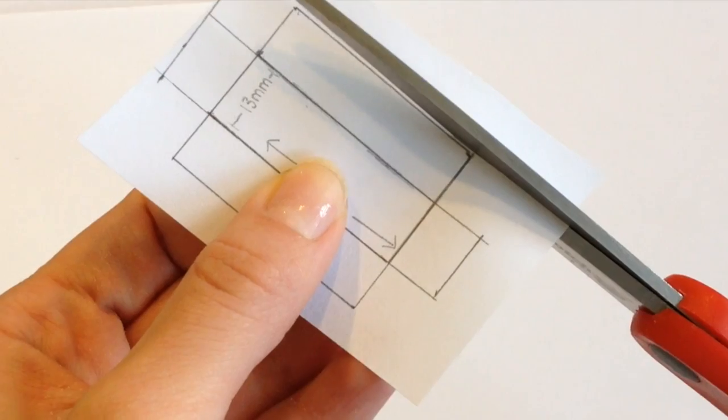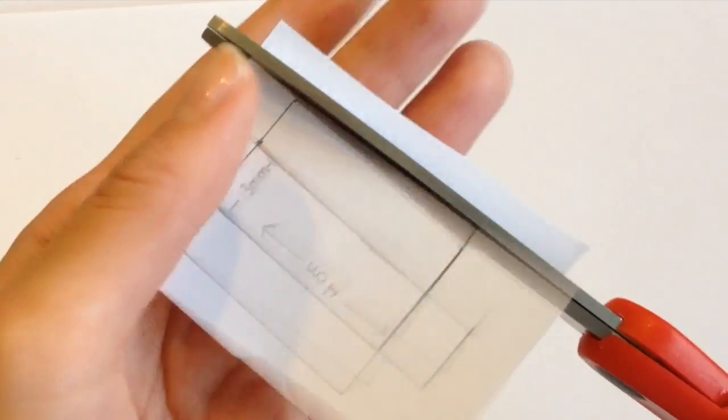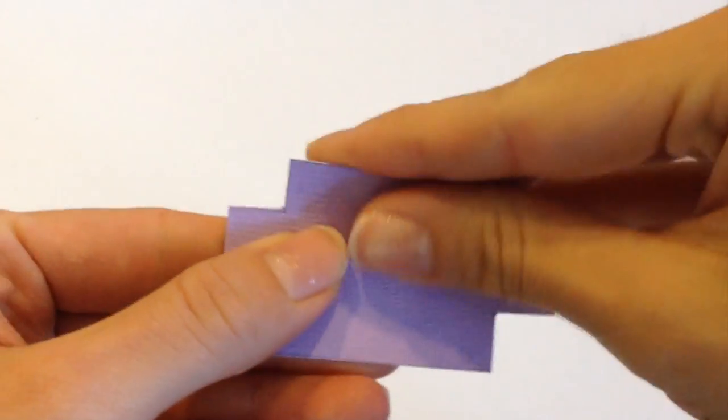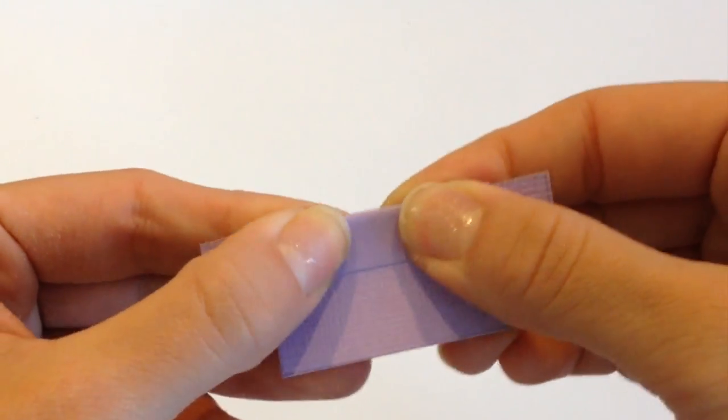but I actually went through several different measurements before I came up with the box that I was happy with. This specific pattern ended up being the box that I chose. It's a very simple box that you just fold up the four sides and you form one half of the box.